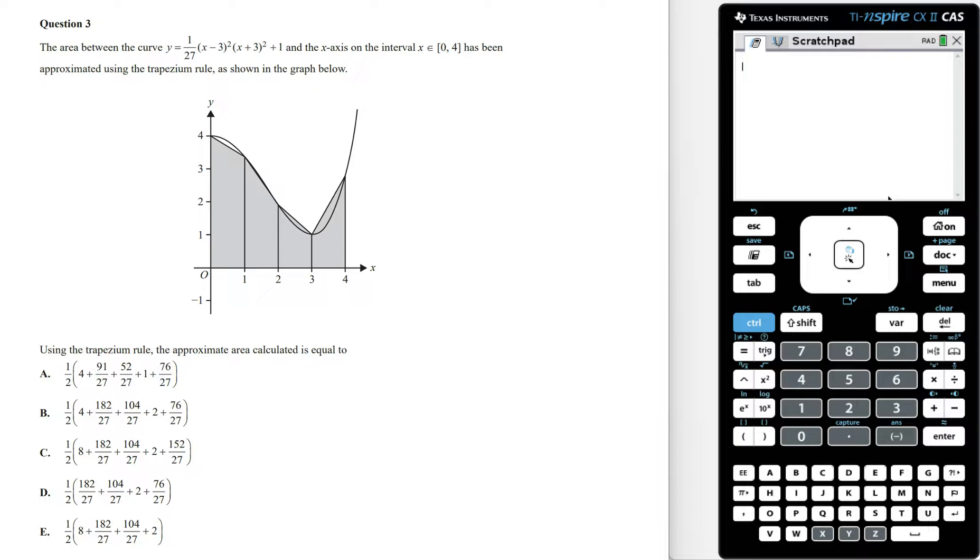In this video, I'm going to show you how to answer the 2023 Maths Methods Sample Exam 2, Question 3. We've got the area between the curve y and the x-axis on the interval where x is from 0 to 4 has been approximated using the trapezium rule as shown in the graph below.